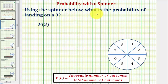Using the spinner below, what is the probability of landing on a three? To determine the probability of an event, we compare the favorable number of outcomes to the total number of outcomes.